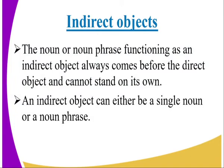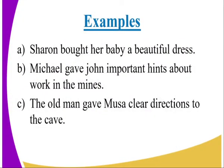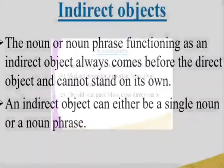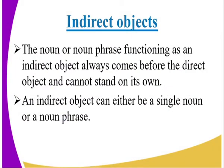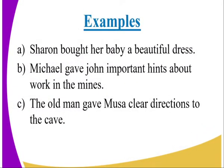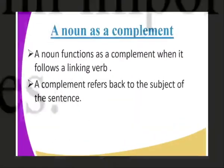The noun or noun phrase functioning as an indirect object always comes before the direct object and cannot stand on its own. Example: Michael gave John important hints about work in the mines. The old man gave Musa clear directions to the cave.